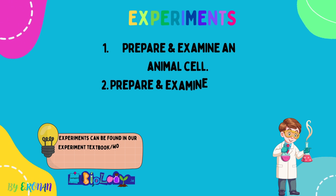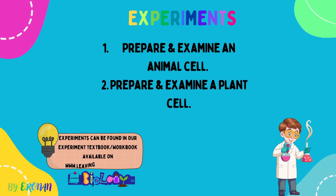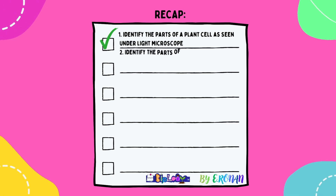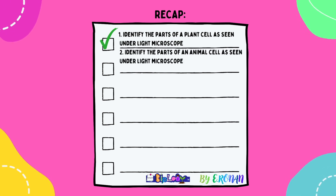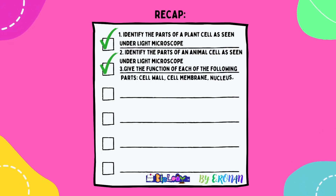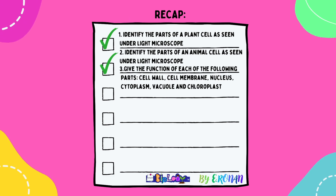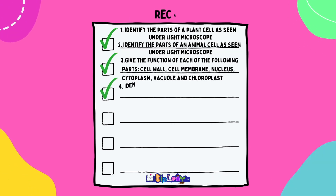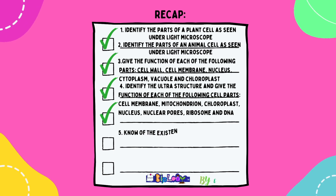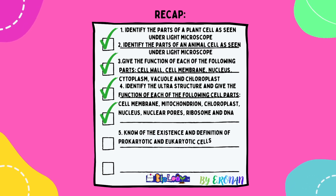Mandatory experiments that can appear in section B include preparing and examining a plant and an animal cell. There is a brand new experiment book available — over 100 pages of procedure, theory, workbook, and solutions — which equates to 15% of your paper. For the recap: you must identify parts of a plant and animal cell seen under a light microscope giving functions of cell wall, cell membrane, nucleus, cytoplasm, vacuole, and chloroplast. You must also identify the ultrastructure and give functions of cell membrane, mitochondria, chloroplast, nuclear pores, ribosomes, and DNA. Finally, you must know the existence and definition of prokaryotic and eukaryotic cells.